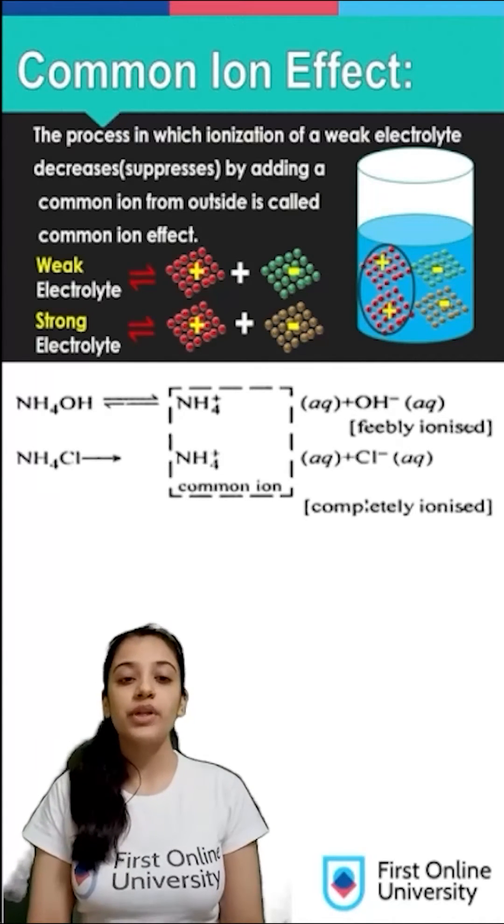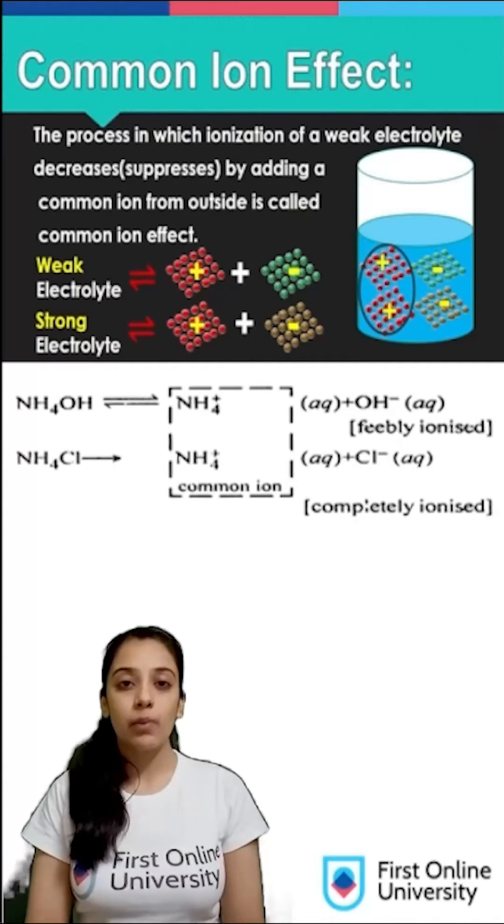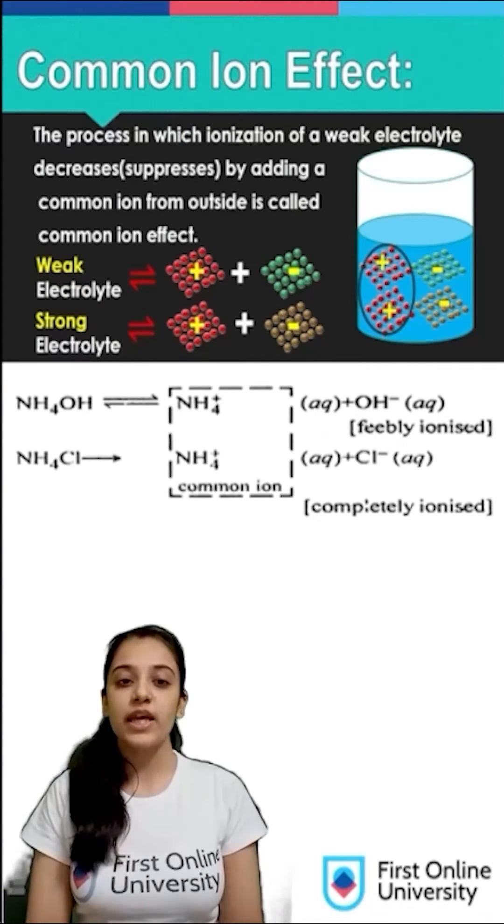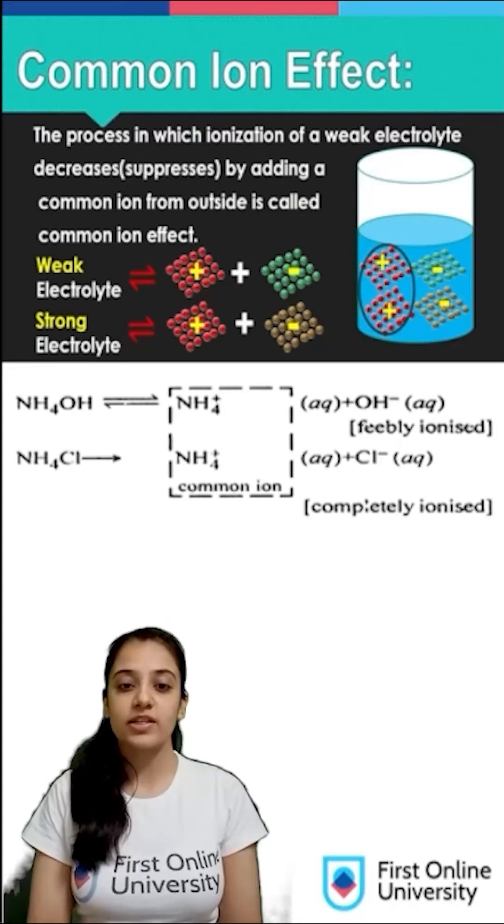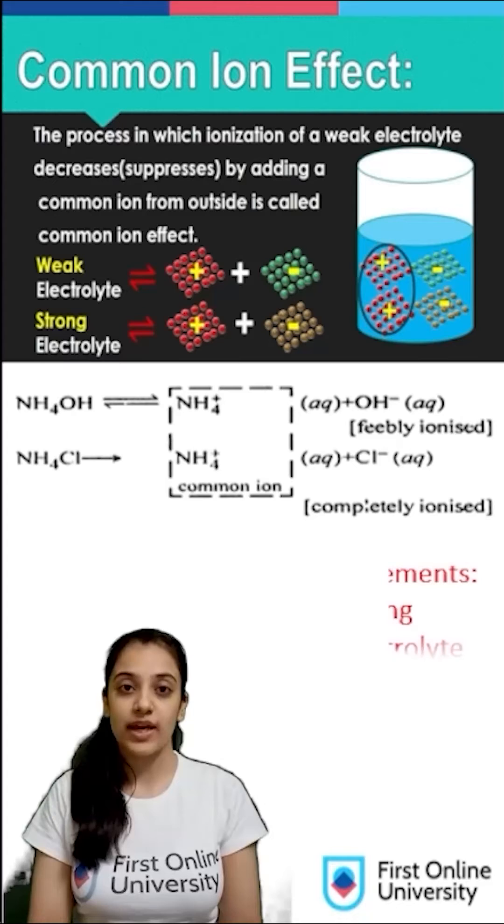For example, if ammonium hydroxide and ammonium chloride are taken together, the ammonium ion being common will shift the equilibrium in the first equation towards the left-hand side according to Le Chatelier's principle and will suppress the ionization of ammonium hydroxide because it is a weak electrolyte.